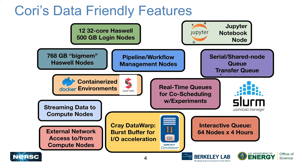In terms of queues, NERSC has options suited for data analytics and experimental data analysis jobs. There is a shared node queue for jobs that don't need a full node — supporting serial jobs or any fraction of a node. There is also a separate queue for transfers. Some experiments require real-time processing — jobs that run immediately upon submission — which requires dedicated resources and is available by application. An interactive queue allows up to six nodes per project and up to four hours, with quick turnaround.